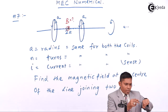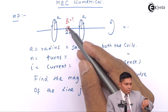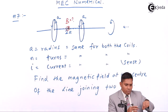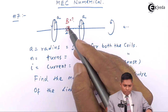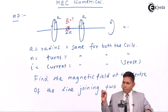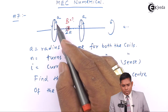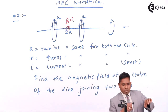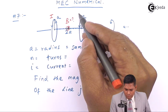If I stand here and look at this coil, I will see the current is in an anticlockwise sense. Here also the current is anticlockwise. But if I see from the other side, then it will be clockwise. So for the midpoint, this coil appears anticlockwise and this coil appears clockwise. Coil one and coil two.